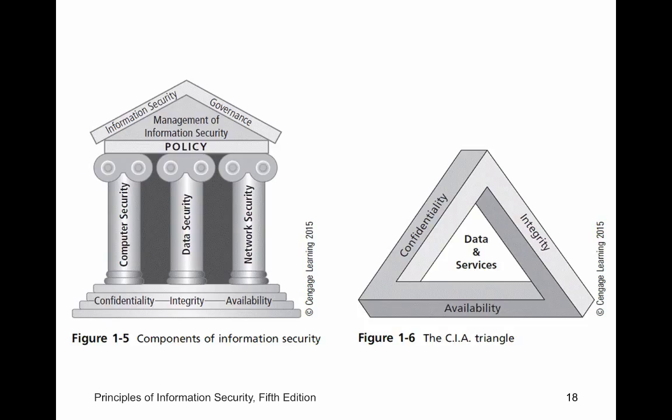On the right-hand side we have our triangle: confidentiality — who has the ability to access; integrity — has the data been altered without access; and availability — what happens if the internet goes down, can you continue to do your job? Think about our data: what happens if we have no integrity of our data, if my grades were modified? Or if our data wasn't available? If you went to enroll and the schedule was offline? Also important are policies — do you have a usage policy, a password policy, a backup policy? That's all aspects of it.